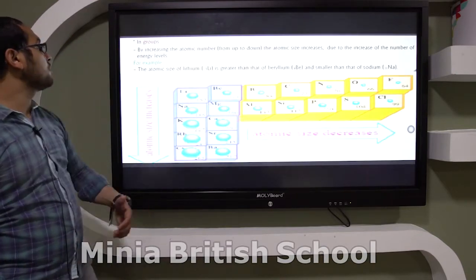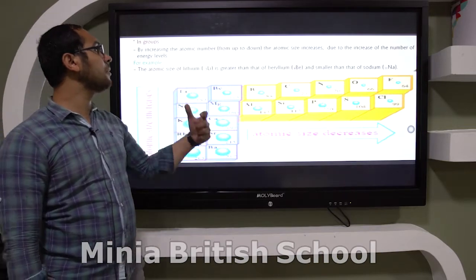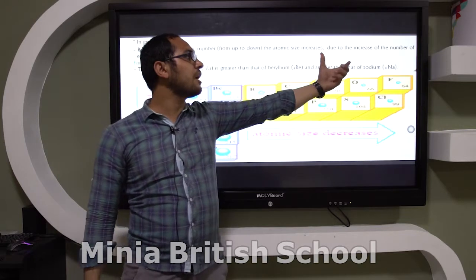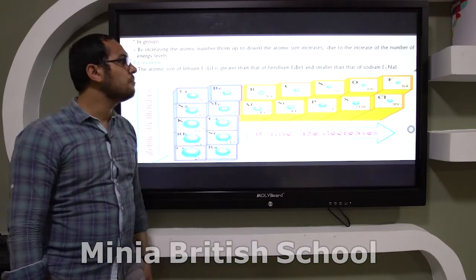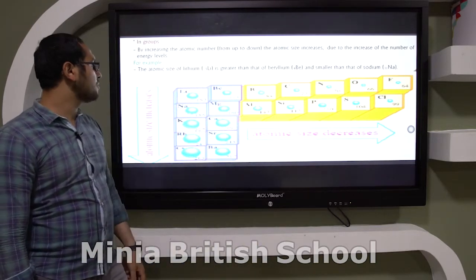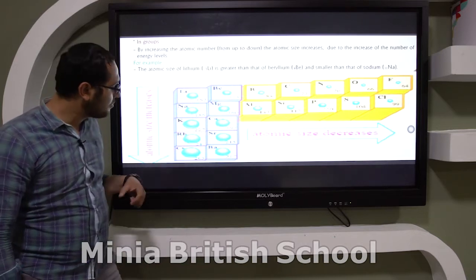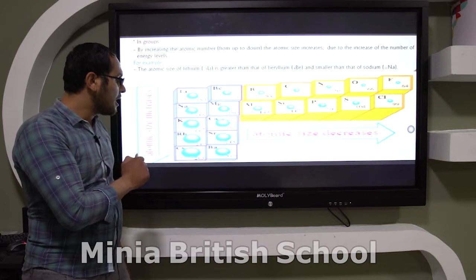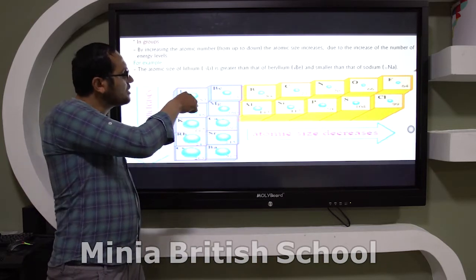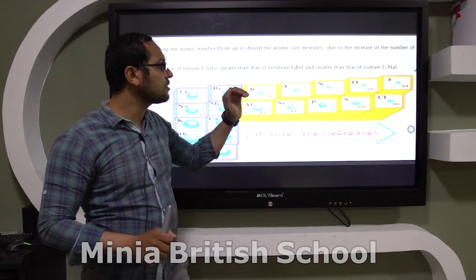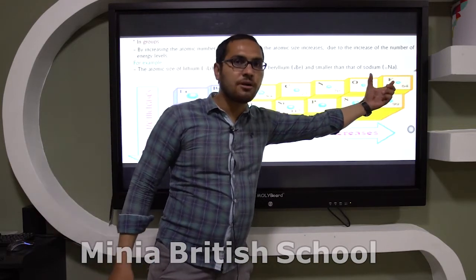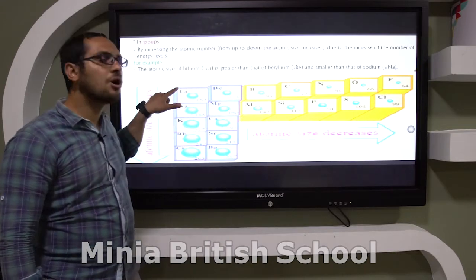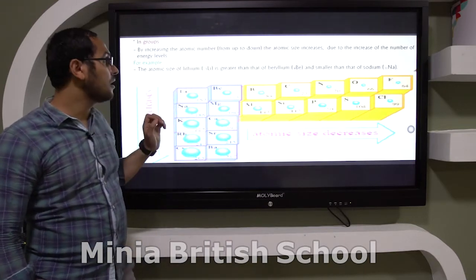In groups, by increasing the atomic number from up to down, the atomic size increases due to the increase in the number of main energy levels. That means the atomic size of cesium is more than the atomic size of lithium, and in periods, the atomic size of fluorine is less than the atomic size of lithium.